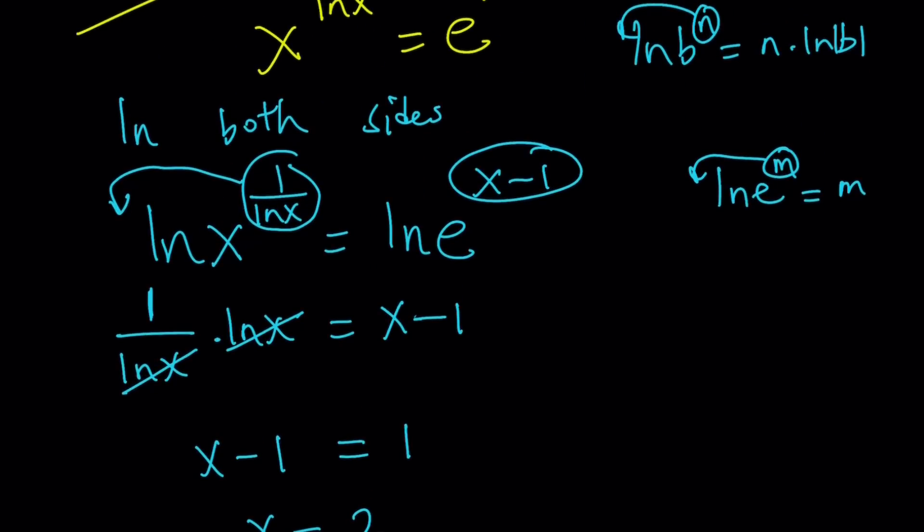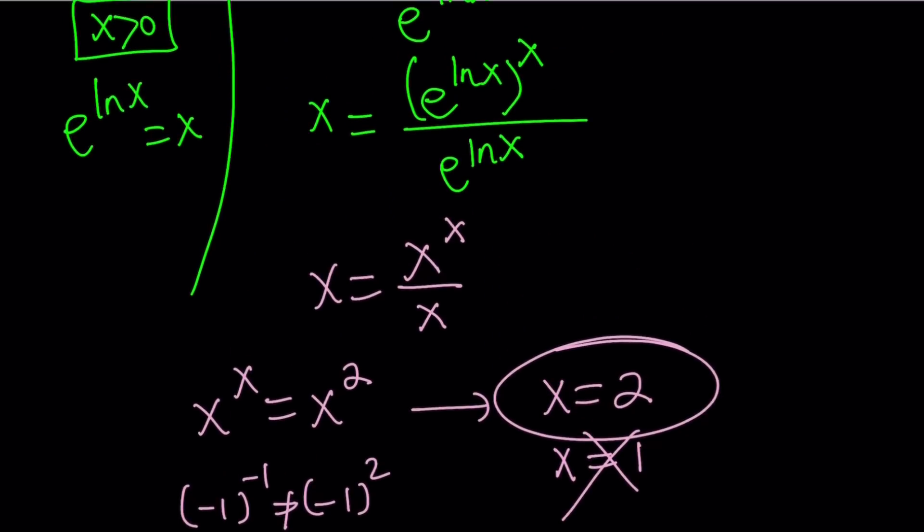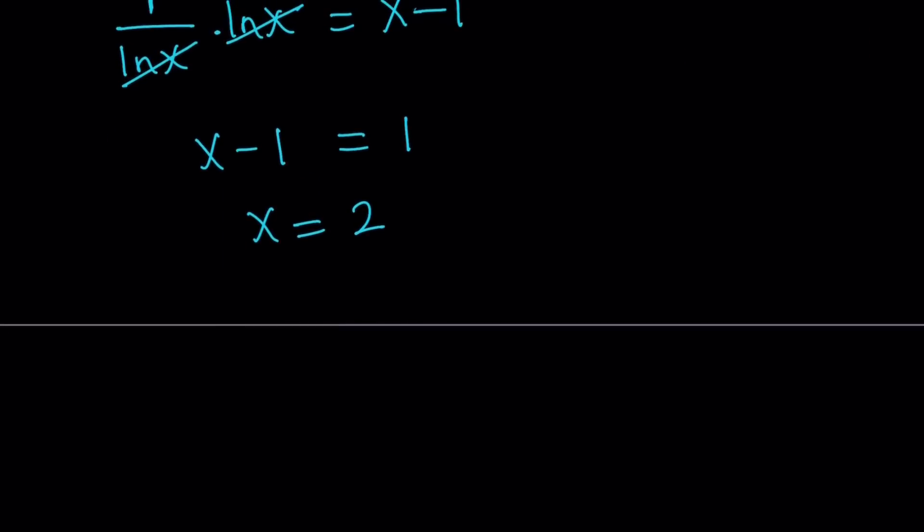Why? Because we did not use the first method. Okay, I don't know if that's a valid explanation, but with the first method, yes, we got an extraneous solution somewhat. But in this case, we only got one solution, and you can easily check.